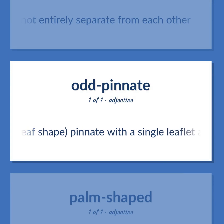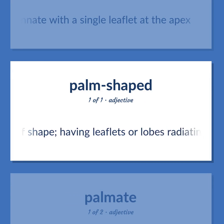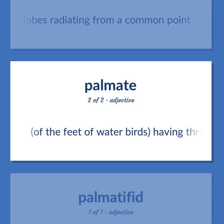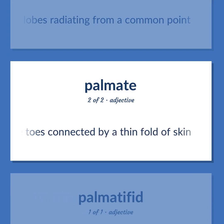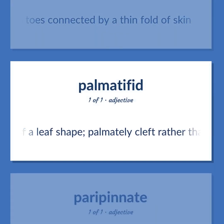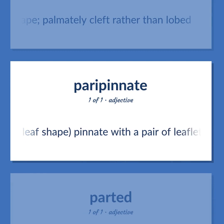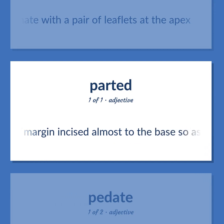Leaf shapes: Pinnate with a single leaflet at the apex. Having leaflets or lobes radiating from a common point. Of the feet of water birds: having three toes connected by a thin fold of skin. Palmately cleft rather than lobed. Pinnate with a pair of leaflets at the apex. Having a margin incised almost to the base so as to create distinct divisions or lobes.